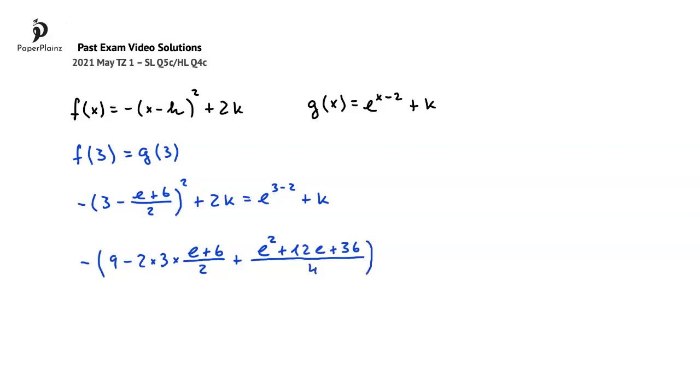We can subtract k from both sides of the equation, so here we get plus k, and this is equal to e to the power of 1, or simply e.